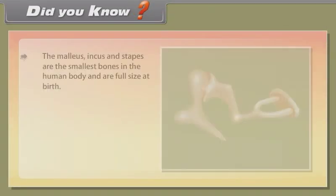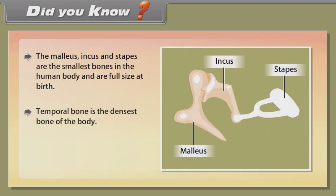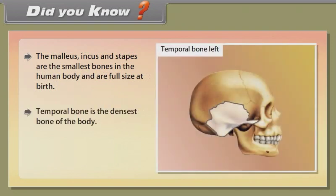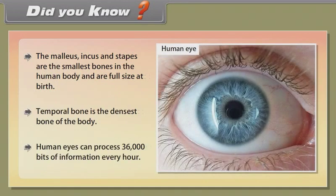The malleus, incus, and stapes are the smallest bones in the human body and are full-size at birth. The temporal bone is the densest bone of the body. Human eyes can process 36,000 bits of information every hour.